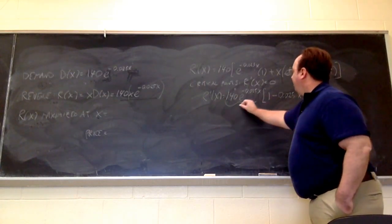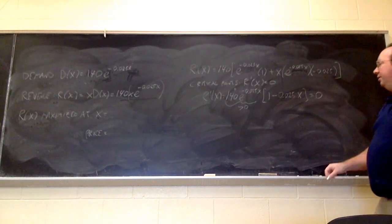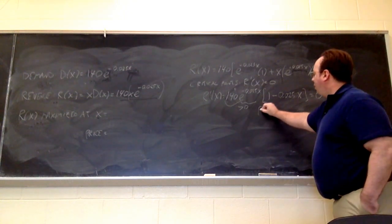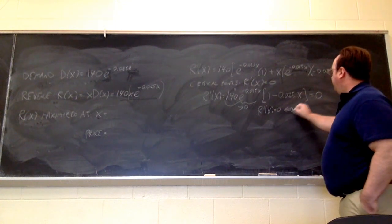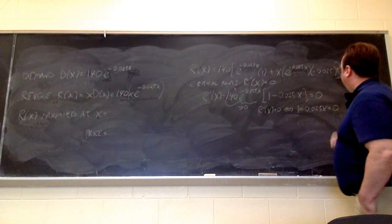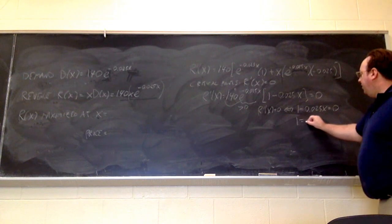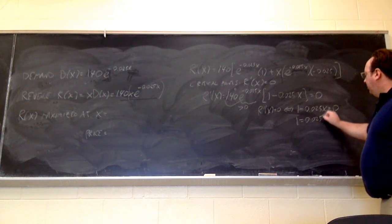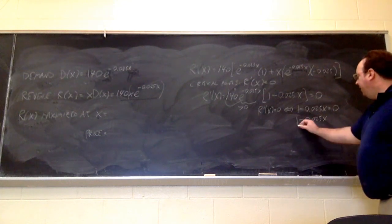This part is, as I mentioned earlier, always positive, so I just need to see where this is equal to 0. So, r prime of x is 0 if, and only if, 1 minus 0.025x is equal to 0. So, now I'm going to move the second term to the other side, and now I can divide both sides by 0.025.